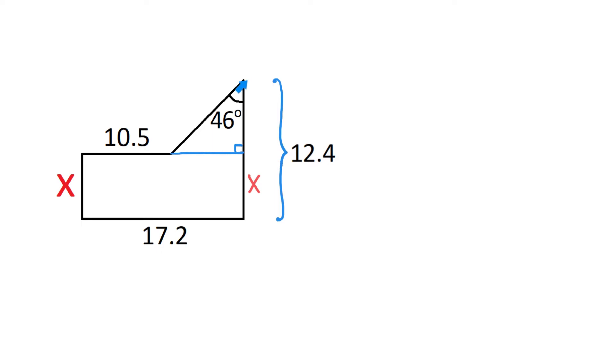Then let's see how we can find this side of the triangle. Here we are given the acute angle of 46 degrees and we can find this side by subtracting 17.2 and 10.5.